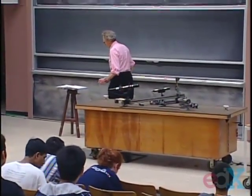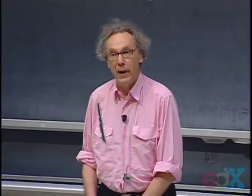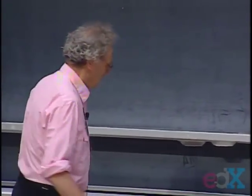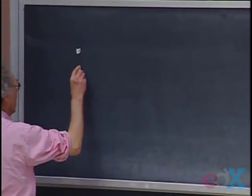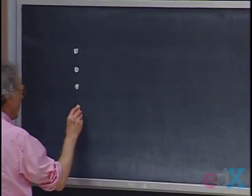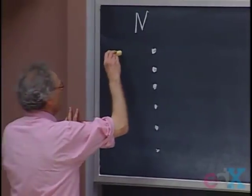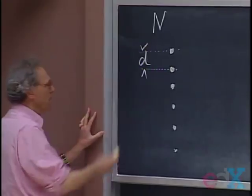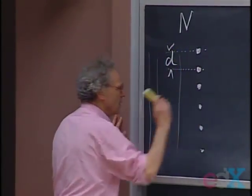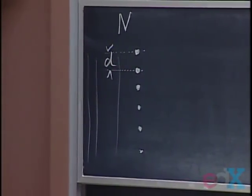Last time we discussed the interference patterns due to two coherent light sources. Today I will expand on this by exploring many, many light sources. Suppose instead of having two slits through which I allow the light to go, I have many — I have N, capital N. Let the separation between two adjacent ones be D. Plane parallel waves come in, and each one of these light sources is going to be a Huygens source, producing spherical waves.